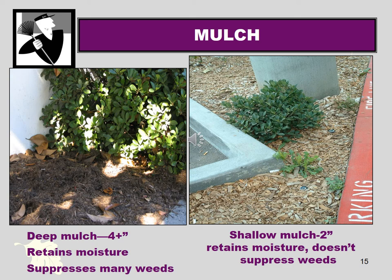If you're using mulch to retain moisture, only a couple of inches of organic mulch like wood chips is needed. But a deeper mulch — perhaps four or more inches — will retain moisture and also suppress weeds. If you look at the image, you can see something like a dandelion coming up through wood chips because the layer isn't very thick. If you had a layer twice as deep, the dandelion would have a hard time pushing up through it when germinating.